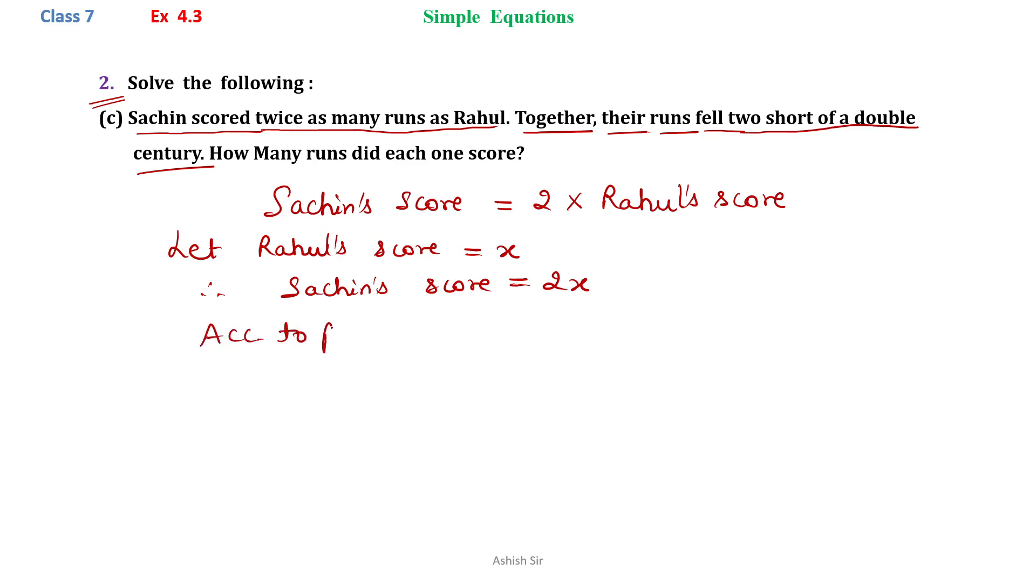So we formulate the situation according to the problem. Together means we have to add both the scores, so Rahul's score is x and Sachin's score is 2x. Together the score is two short of double century, means 2 less than double century. So here we can solve it: x + 2x = 200 - 2.